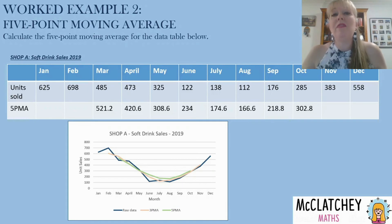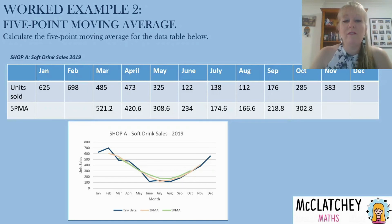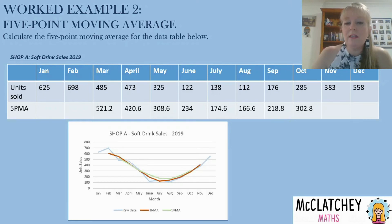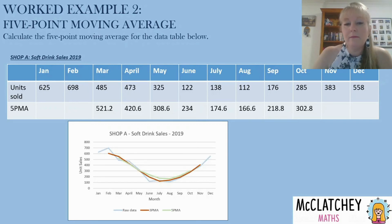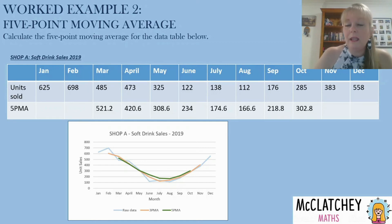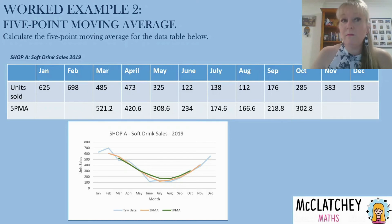Let's look at what that looks like when we graph them against each other. That dark blue line is the raw data. The orange is the three-point moving average — you can see it smoothed things out a little bit. And now the five-point moving average, shown in green, is even smoother again with that curve. So it really does flatten things out and take off all the edges when you're using a five-point moving average versus a three-point moving average.